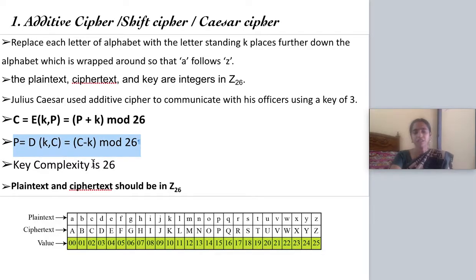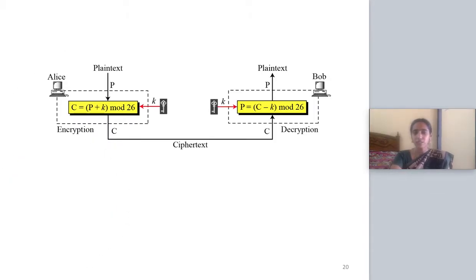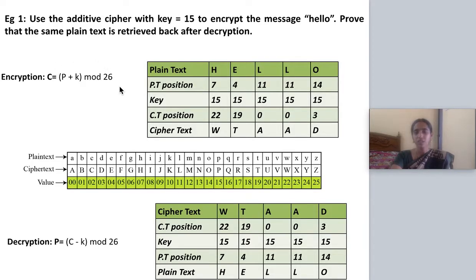For decryption, from the ciphertext you subtract the key. If you get a number out of the range 0 to 25, you perform mod 26. The key complexity for this method is 26. In the diagram: you give the plain text, add the key to the positional value of the plain text, take modulus 26 if required, and get the ciphertext. On the receiver side, subtract the key from the ciphertext positional value, apply modulus if required, and retrieve your plain text. This is the entire working of the Caesar cipher method.